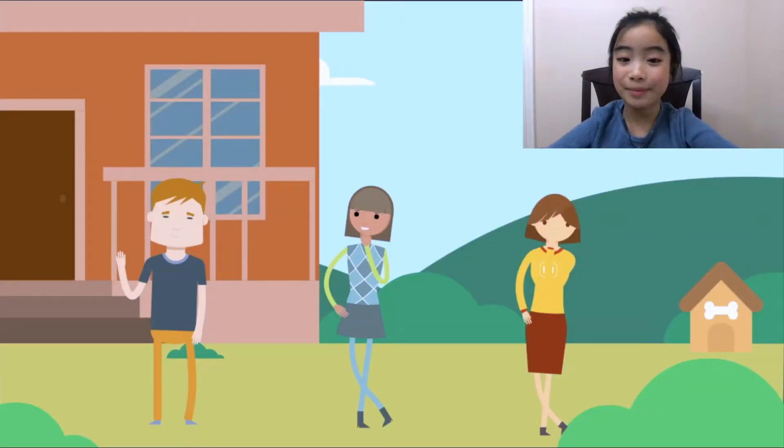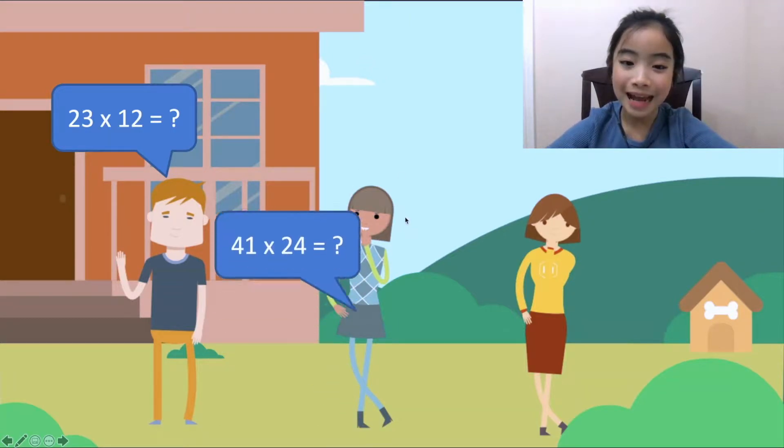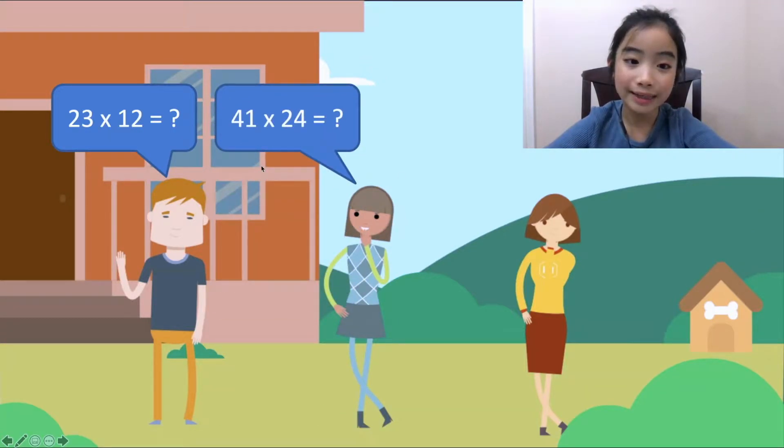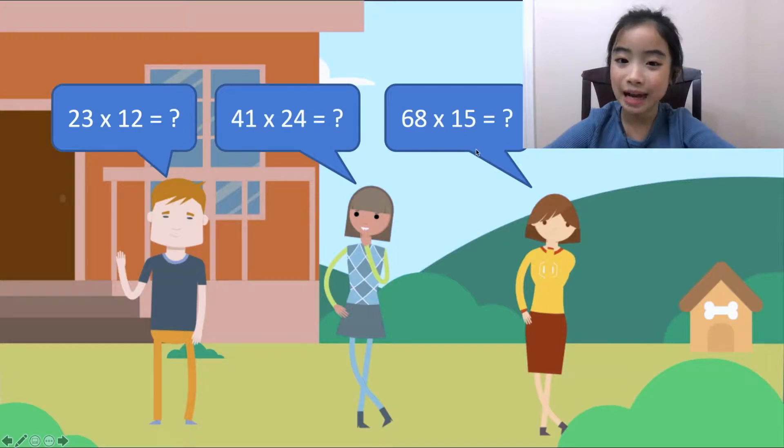Today, me and my friends are playing a two-digit multiplication game. My friend Adam asked, what is 23 times 12? My friend Helen asked, what is 41 times 24? And I asked, what is 68 times 15? The game goes like this. One of us asks a question, and the other two need to figure out the question. The first one to figure it out correctly is the winner.